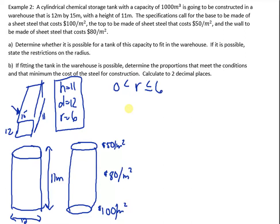So if the height is 11, then we know that pi r squared times 11, which is our volume, is going to be greater than or equal to 1,000. And we get that from the 1,000 meters cubed, that's the capacity. So if we divide both sides by 11 pi and then root it, we get r is greater than or equal to 5.38.